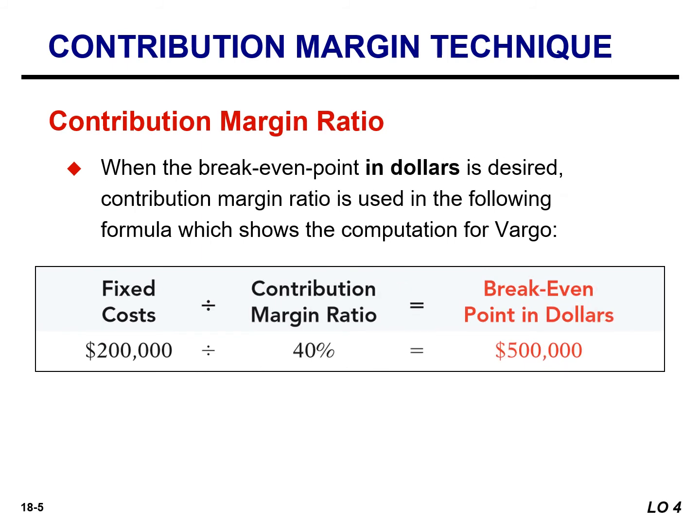Recall that the contribution margin ratio is the percentage of each dollar of sales that is available to cover fixed cost and generate net income. To determine the sales dollars needed to cover fixed cost, we simply divide fixed cost by the contribution margin ratio.